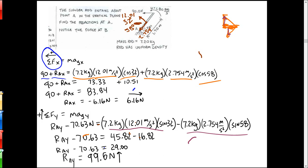To summarize the steps for the rotation problem: first find the moment of inertia about A and find the weight. Then take moments about A to find α, knowing ω already. Use α to find tangential acceleration and ω to find normal acceleration, draw them on the rod, then apply the force equations with static stuff on the left and dynamics on the right. Get the proper signs and don't overthink it.